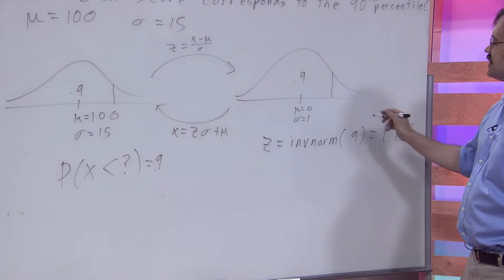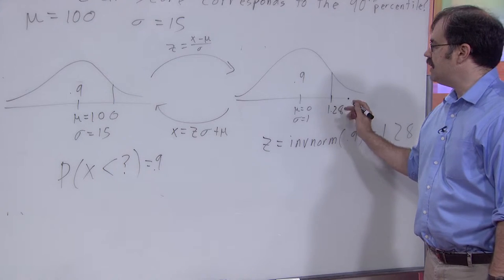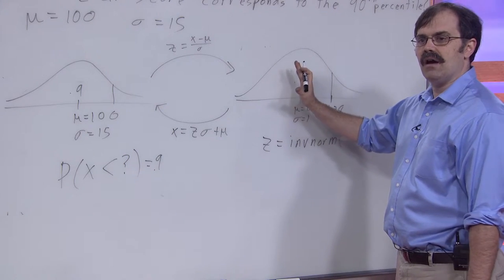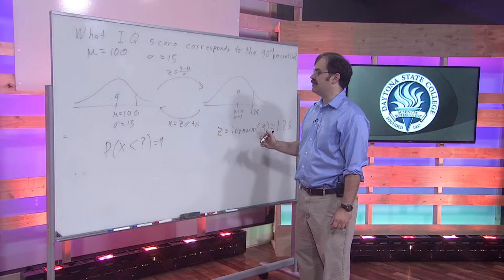So what we're saying again is that the z-score of 1.28 corresponds to having 90 percent of your population with z-scores that were less than 1.28.